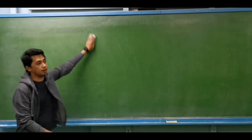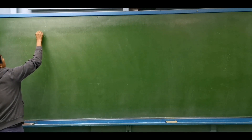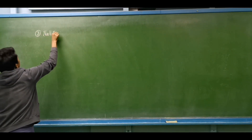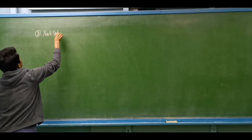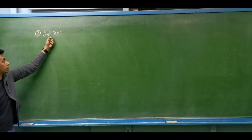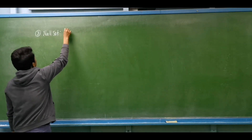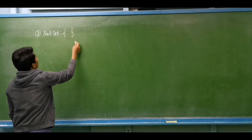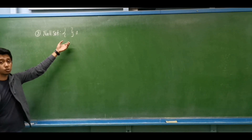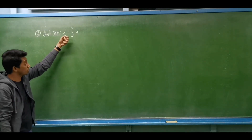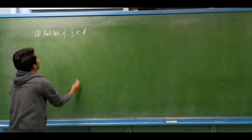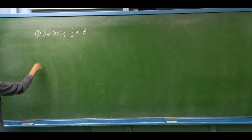Our third type of set is number three — the null set, or basically an empty set. If we say an empty set, it contains no elements. We may use just an open and close bracket, or we use the symbol Ø. This is for a null set.